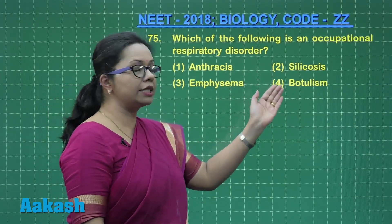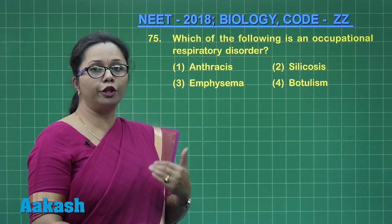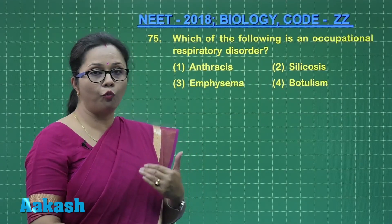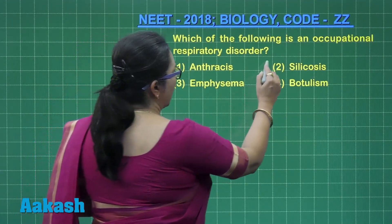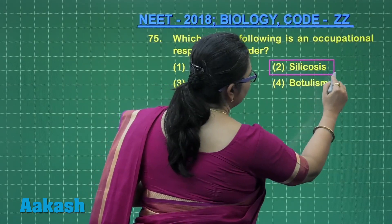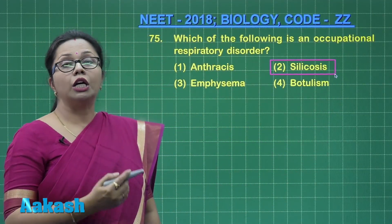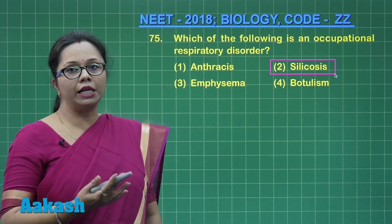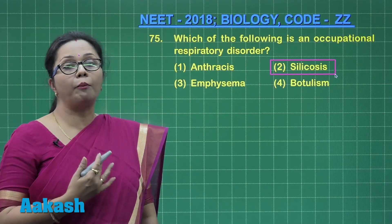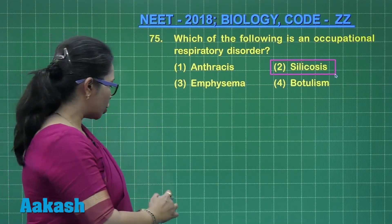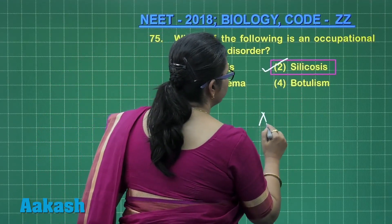An occupational disease is one where a person has to inhale certain substances at the place of work, and that is silicosis. People working in the construction or glass industry have to inhale silica, which leads to lung fibrosis and decreased compliance of the lungs. So the correct answer is option 2.